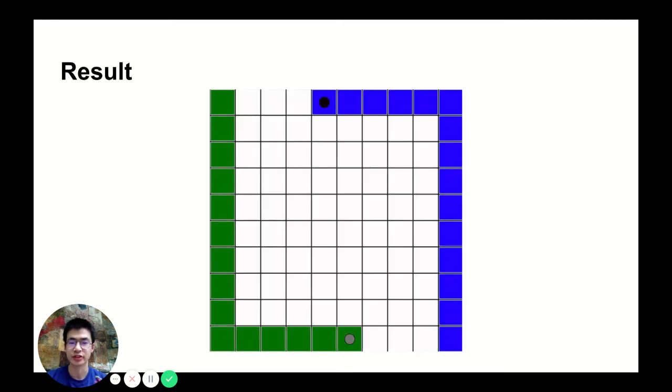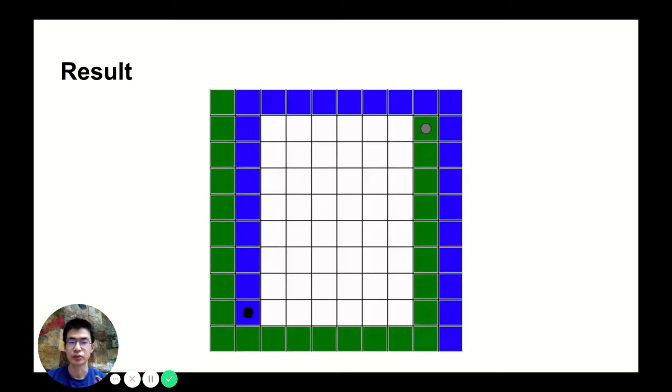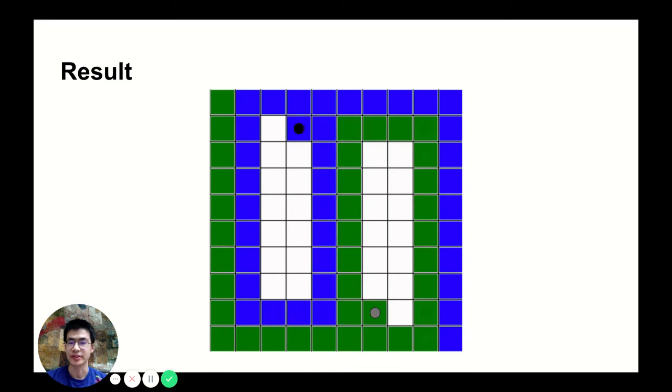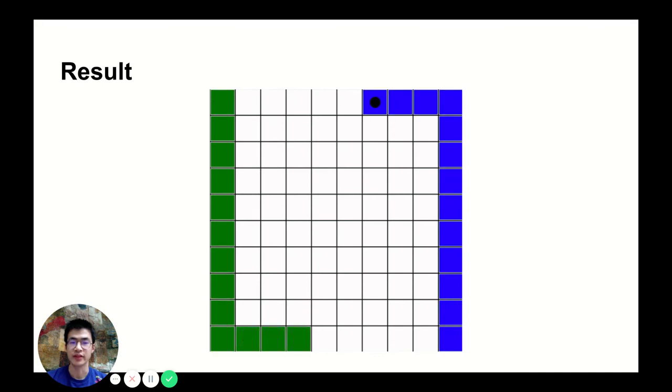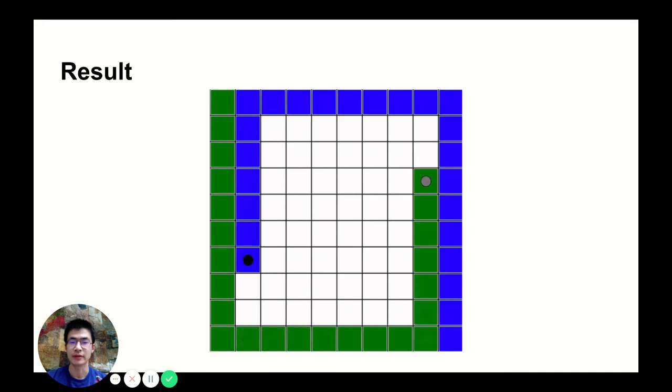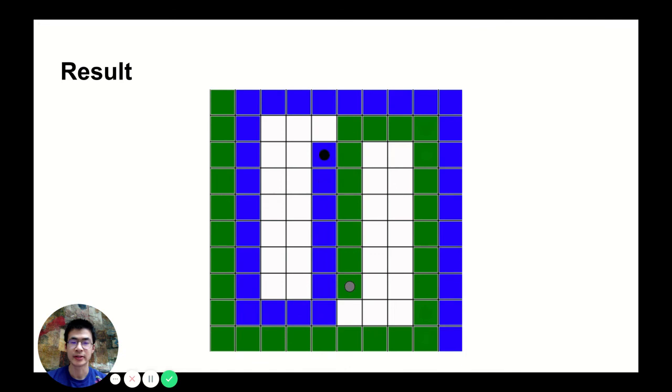In this animation, you can see how two drones cooperate with each other and cover the entire field without revisiting a grid.